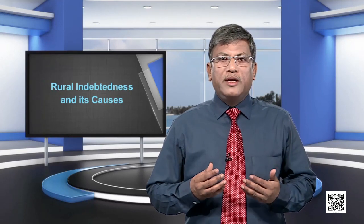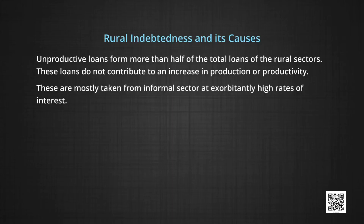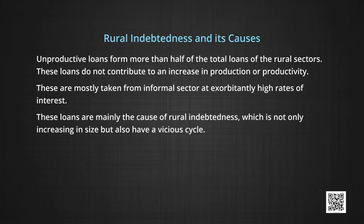Now, the point of rural indebtedness and its causes. Indebtedness is the basic problem of Indian agriculture. Farmers need loans for both productive as well as other purposes. Unproductive loans form more than half of the total loans of the rural sector. These loans do not contribute to an increase in production or productivity. These are mostly taken from the informal sector at exorbitantly high rates of interest. These loans are mainly the cause of rural indebtedness, which is not only increasing in size but also forms a vicious cycle. Poverty is the main cause of rural indebtedness.